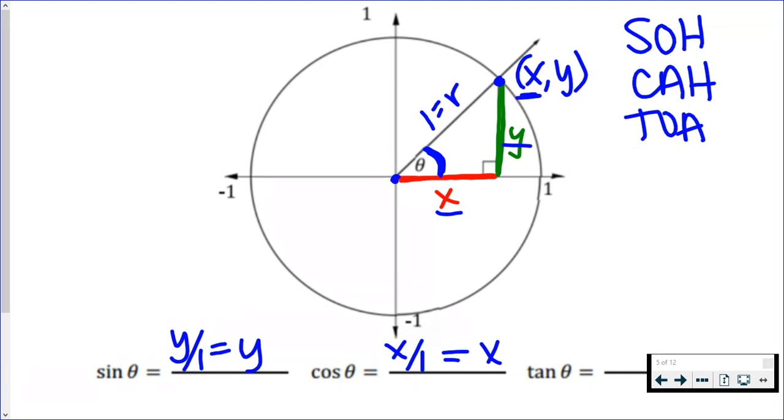Tangent is opposite over adjacent. So opposite from theta would be Y, adjacent to theta would be X. So tangent in the unit circle would just be the Y value of the ordered pair divided by the X value of the ordered pair.